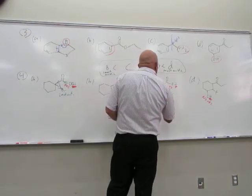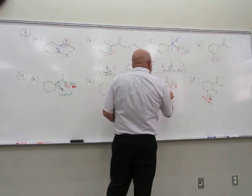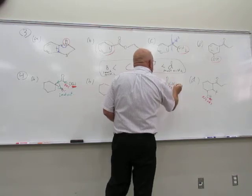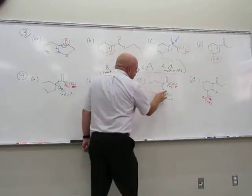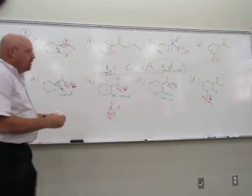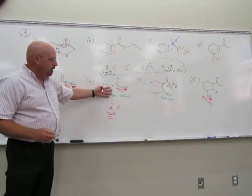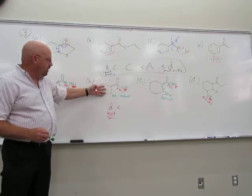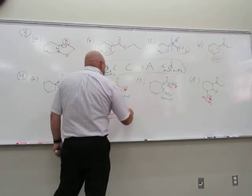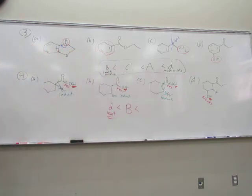This one has a bromine — it had inductive effect. So we figured out the next position. The next least acidic is the one with no additional inductive effects. So B is next.